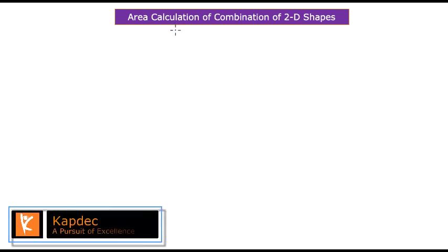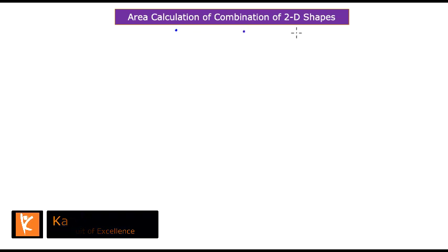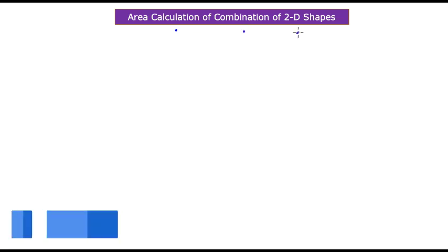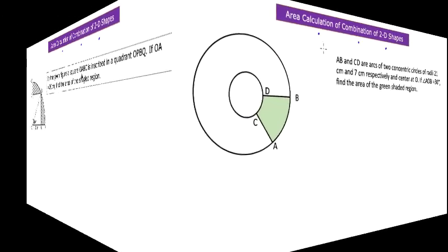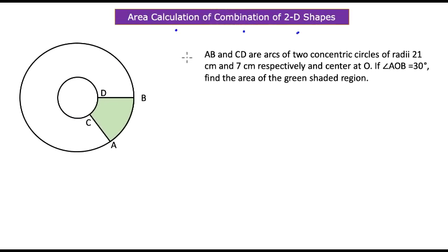In this geometry lesson we are going to talk about how to calculate the area when you are combining two or more two-dimensional shapes. The best way to understand this is by going through some examples. Here is our first scenario: we have two arcs AB and CD coming from two circles.